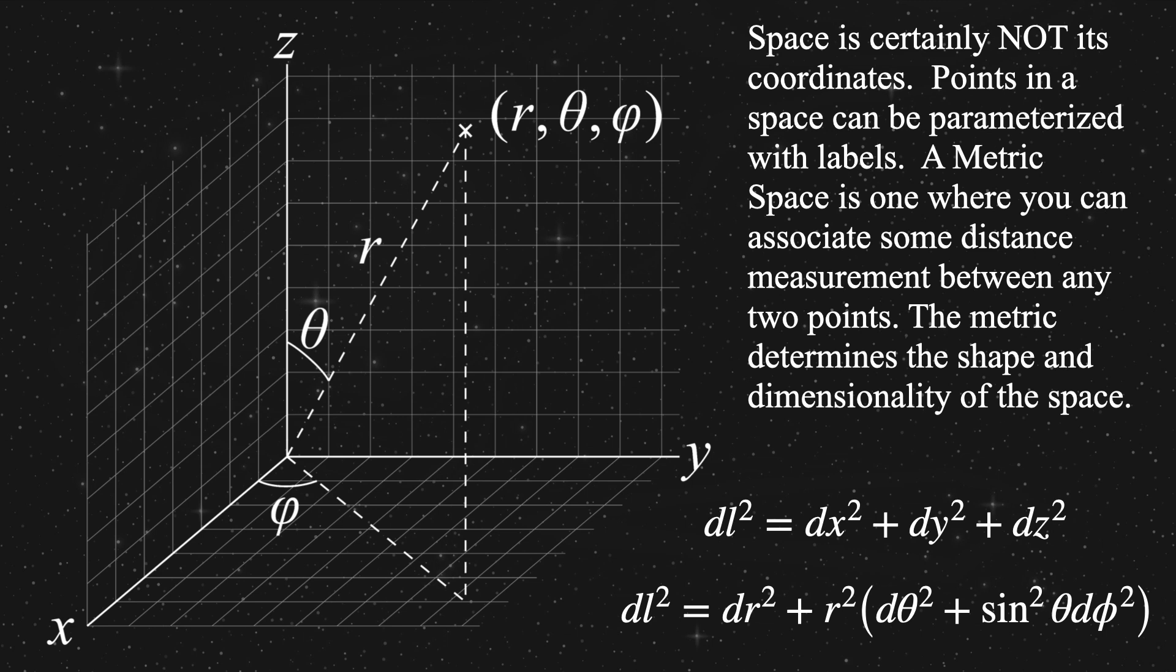The metric transforms points in a space, each labeled with coordinates, into a distance between the endpoints of the curve. Again, the curve between two points can be called a path, and this path curve in a metric space has a parameter that, as we go from point to point, will translate the continuous smooth set of points on the curve into a distance.